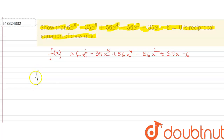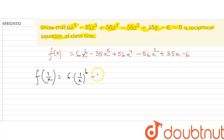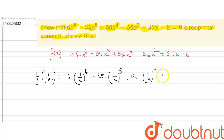So here we can write f(1/x). In place of x we will put 1/x. So here we can write that is 6 into (1/x)⁶ minus 35 into (1/x)⁵ plus 56 into (1/x)⁴ minus 56 into (1/x)² plus 35 into (1/x) minus 6.